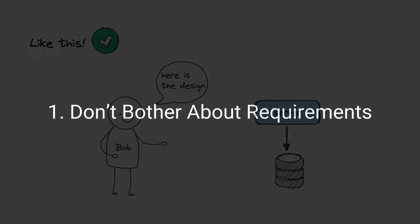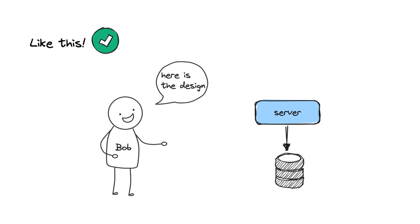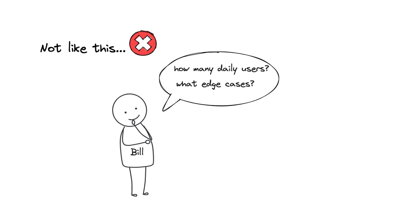Bob was the type of guy who answered every question right away, so he started the design without understanding the exact requirements. But Bill asked many counter-questions and didn't start the design until he understood the requirements.